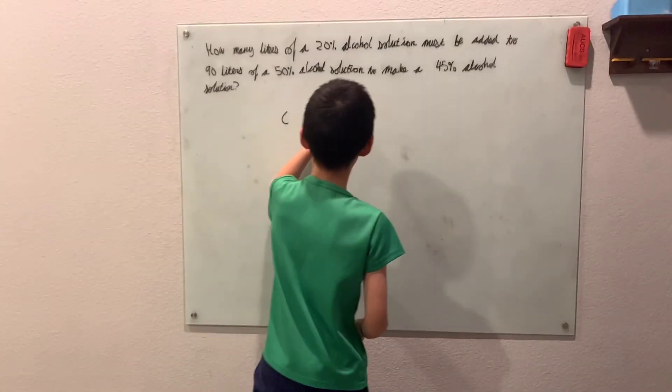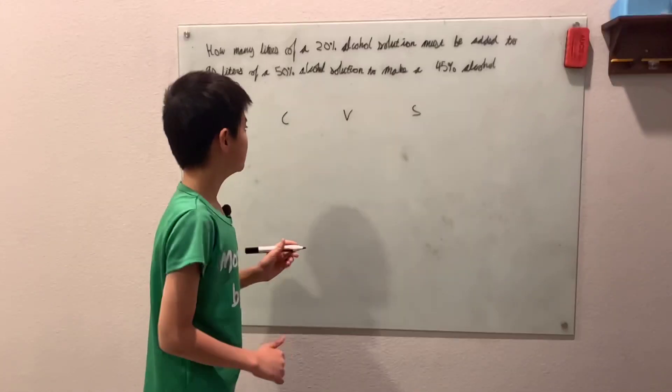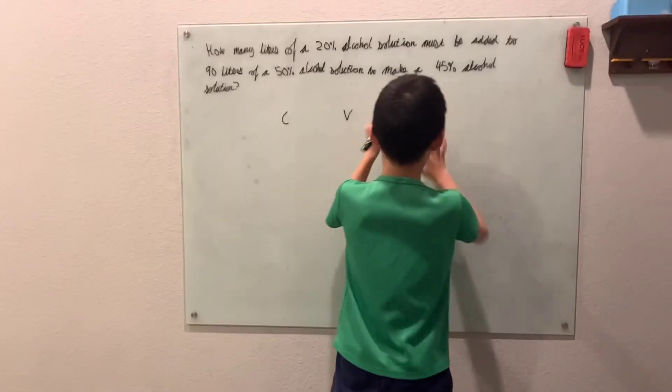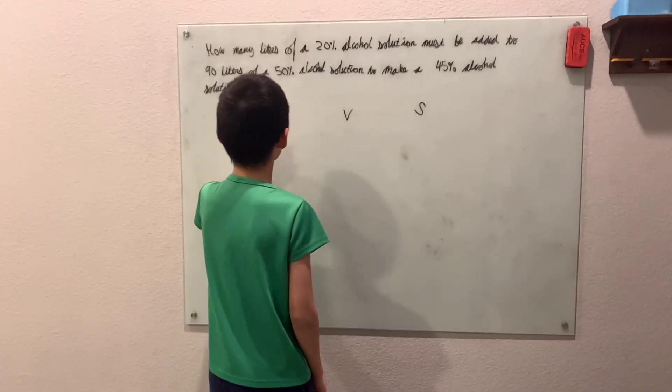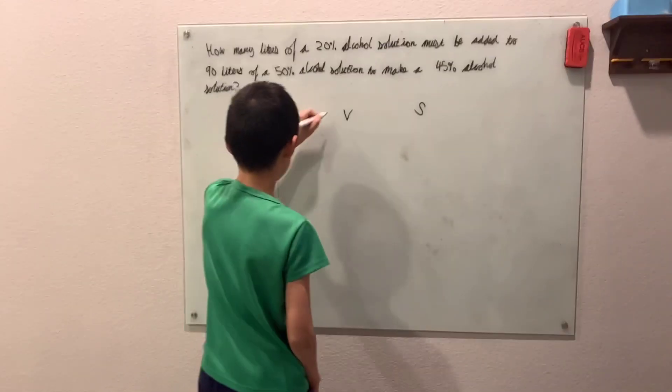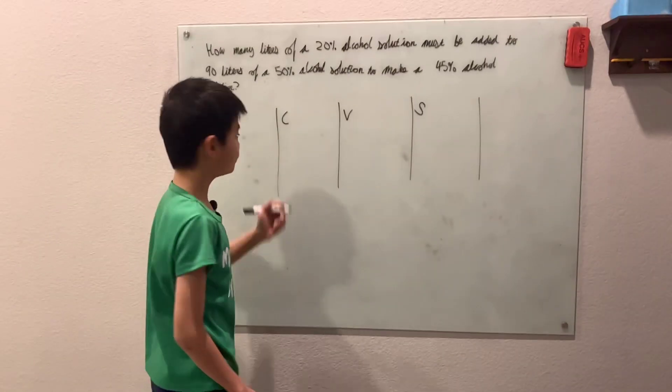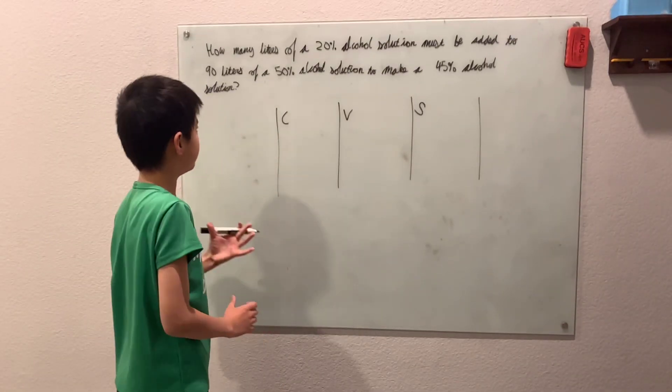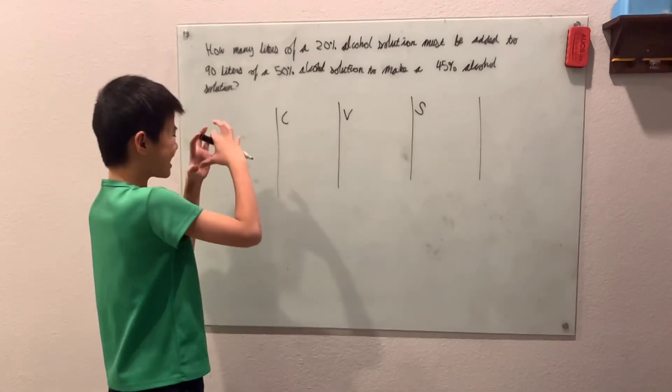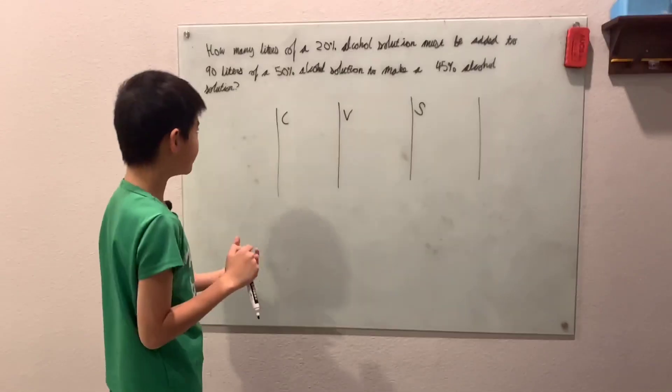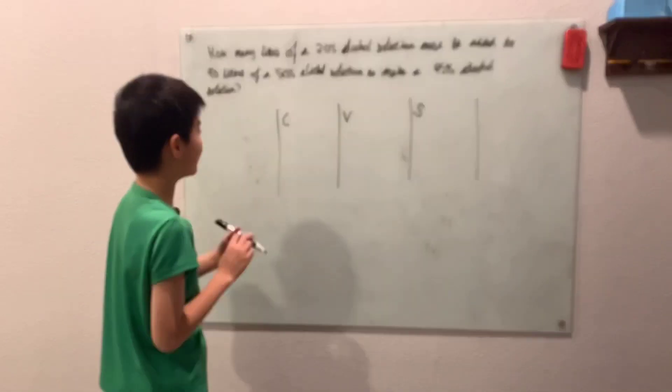I have a C column, a V column, and you guessed it, an S column. So first of all, this C stands for concentration, which basically means how concentrated, how much of it is pure percentage, what percent of it is pure alcohol in this situation that we have.